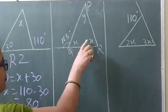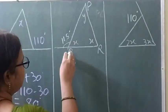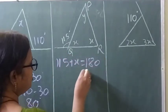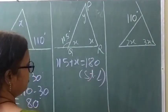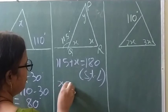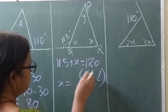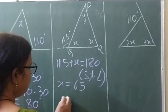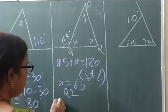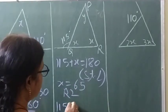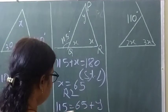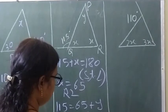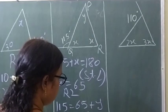In the second figure, find x and y. First, 115 plus x equals 180 — straight angle reason — so x equals 65 degrees. Then, using Reason 2: 115 equals 65 plus y, so y equals 115 minus 65, which is 50 degrees.